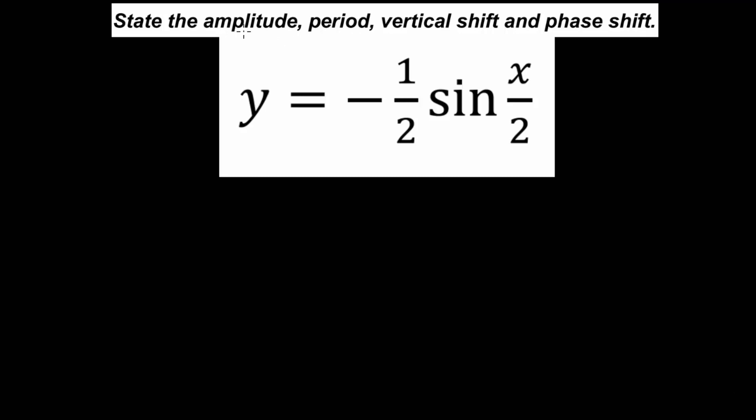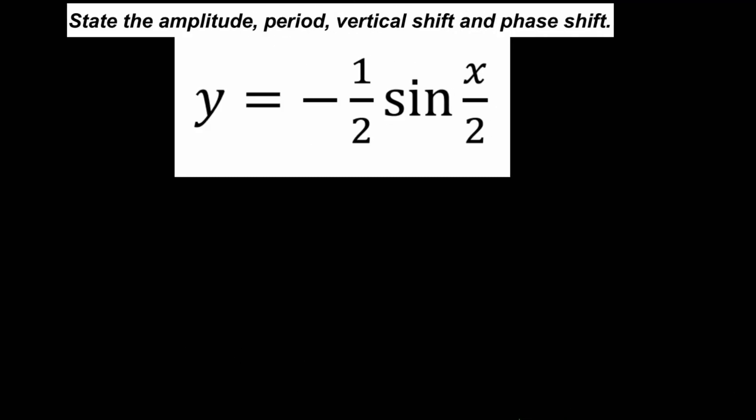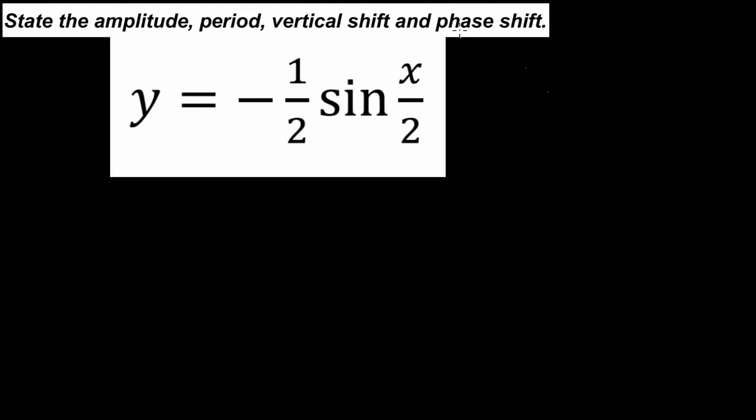When dealing with amplitude, period, and horizontal and vertical shifts, we need to know the general equation for a sinusoidal function. We could write that as y equals a multiplied by the sine, or this would be true for the cosine as well, of b multiplied by x plus c.